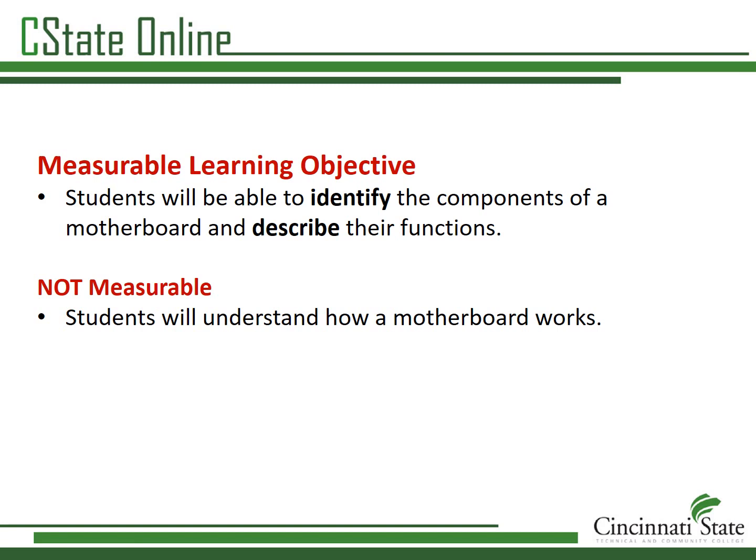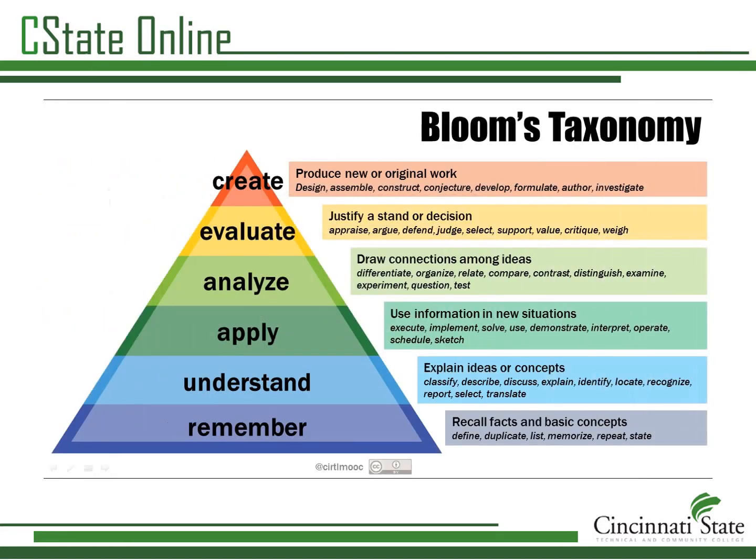Measurable objectives use strong verbs to describe what the students will be able to do at the end of the unit and ultimately the course. In this example, the verbs identify and describe clearly state what the students should be able to do at the end of the unit on motherboards. Objectives that aren't measurable, such as those saying students will understand how a motherboard works, are too vague and don't clearly describe what the students should know. They also fail to adequately steer the instruction and assessment in the course.